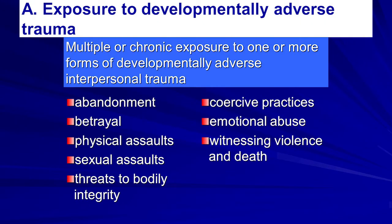Some new developments have come over the last few decades, and we're seeing real hope. Multiple chronic exposures to one or more forms of developmentally adverse interpersonal trauma — abandonment, betrayal, physical assaults, sexual assaults, threats to bodily integrity, coercive practices, emotional abuse, witnessing violence and death. It's a matter of degrees, but we're talking about severe exposure over a period of time involving many factors.